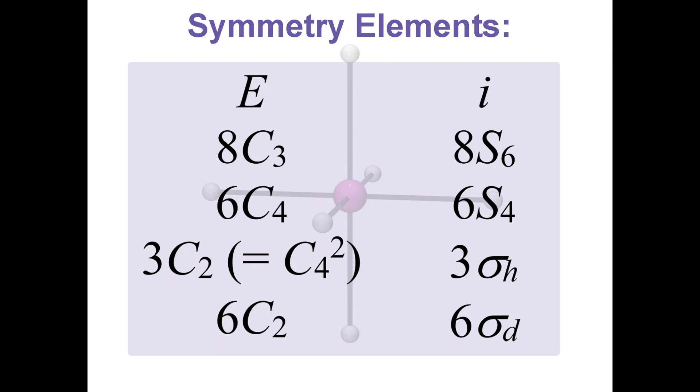Obviously, there's the symmetry element E, the molecule exists, but let's look at some of the other symmetry elements. We'll start with the C4 rotations. There are six of them.